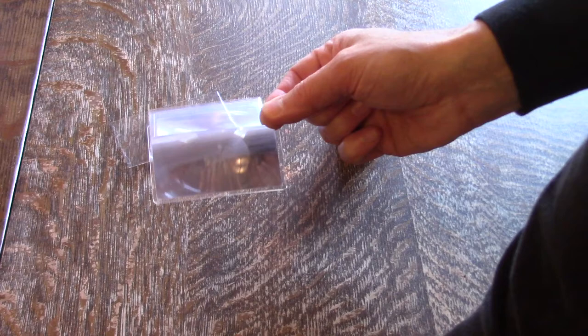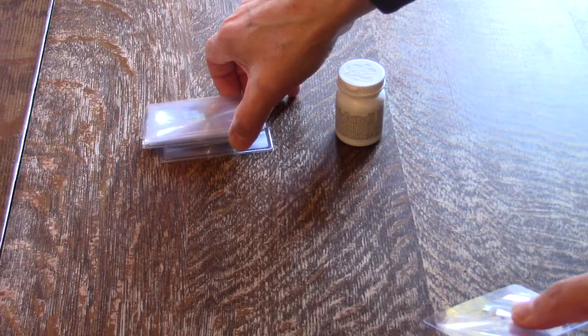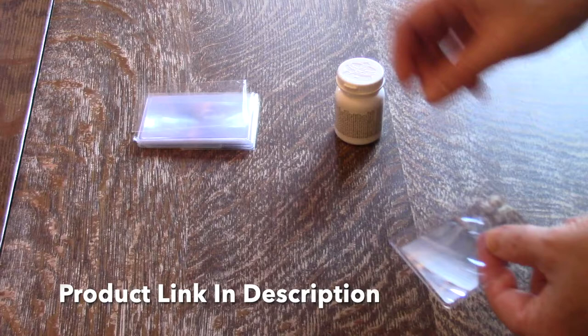This is a Fresnel lens credit card size magnifier, and it comes in a pack of 12. They are fairly inexpensive, and they're made with plastic.